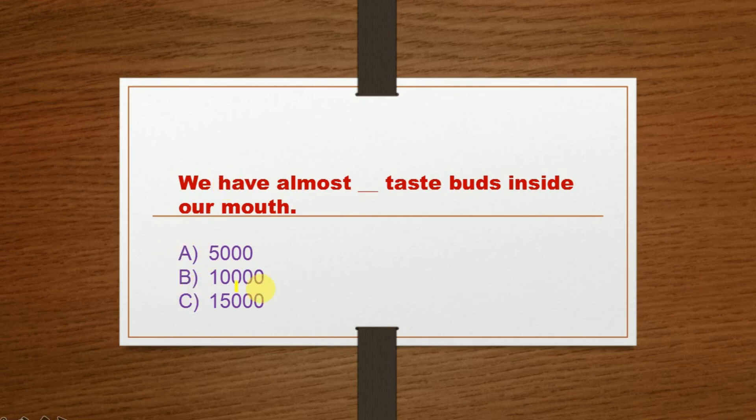Next question: We have almost dash taste buds inside our mouth. Option A: 5,000, Option B: 10,000, Option C: 15,000. The correct option is Option B: 10,000. That's all for today's copy, and we will upload our third unit soon.